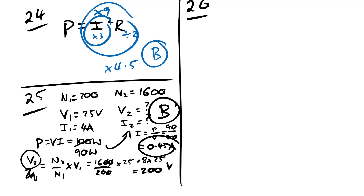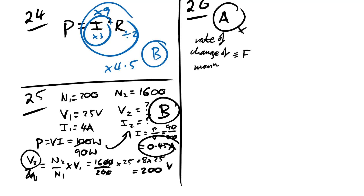Question 26: what is NOT true about the proton at point P (periapsis)? A: rate of change of momentum is at a minimum — this is the same as force, and the force is greatest at P (closest approach), so this statement is false — this is the answer. B: kinetic energy at a minimum — true, traveling slowest. C: potential energy at a maximum — true, closest to the nucleus. D: acceleration at a maximum — true, force is greatest.